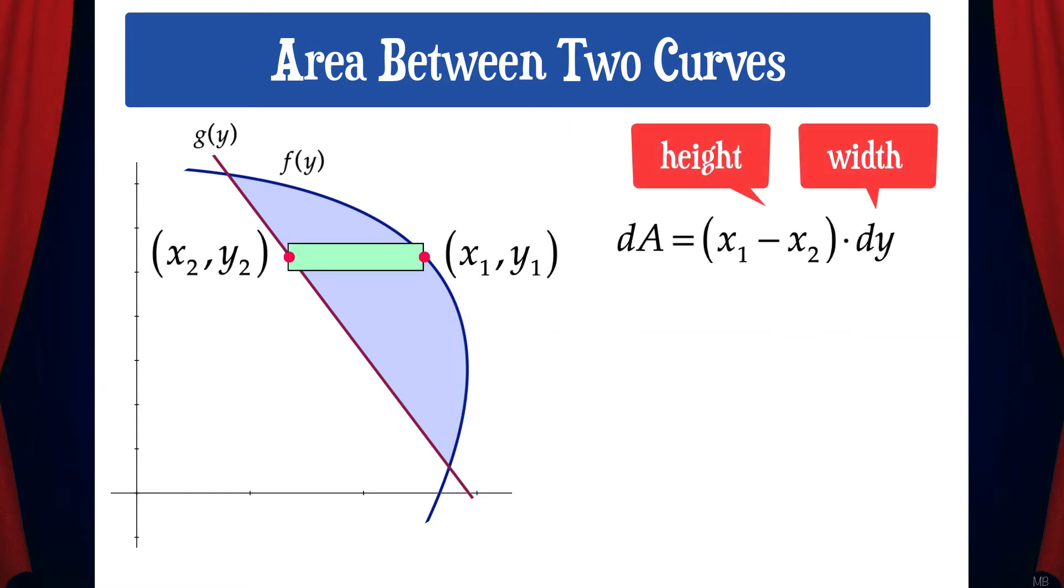The width of the rectangle is now dy and the height is x1 minus x2. That means dA equals the quantity of x1 minus x2 times dy. And that means the area between the two curves is the sum of the dA's, which is the definite integral from a to b of f(y) minus g(y) times dy. And it's important to note here that a and b are y values.